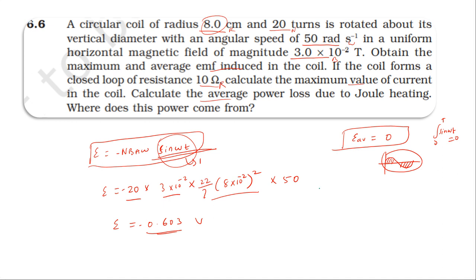Current is equal to EMF by resistance. EMF is 0.603, resistance is 10 ohm. So 0.0603.